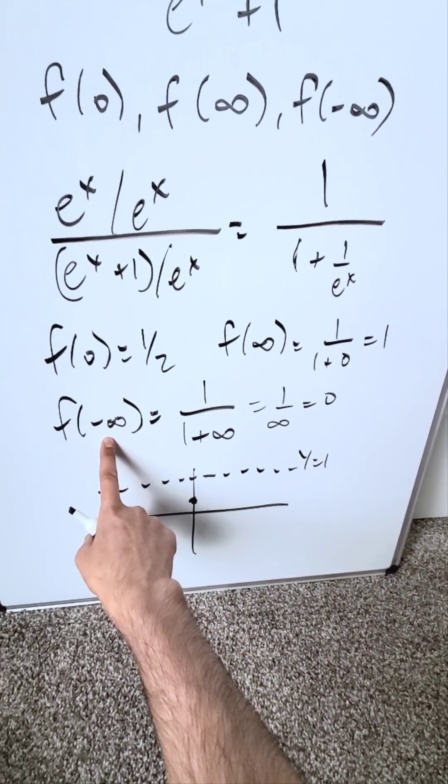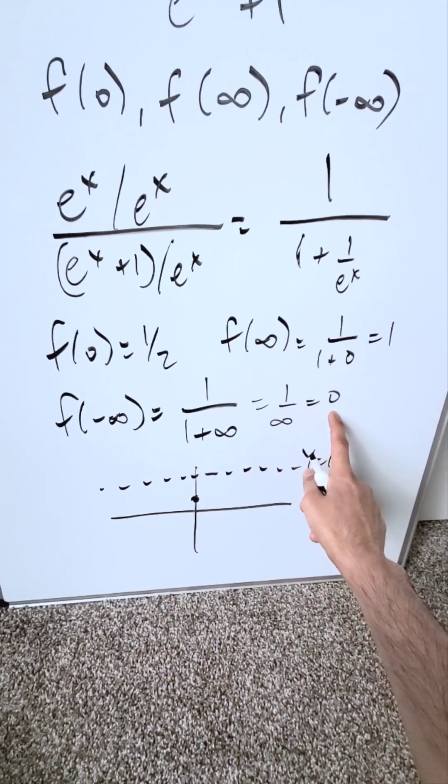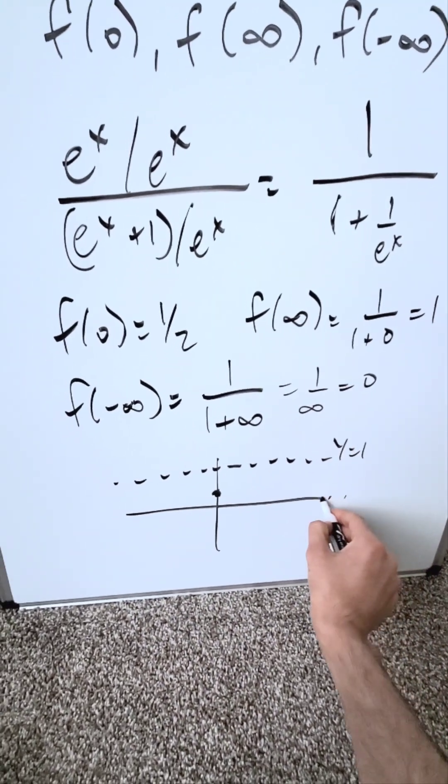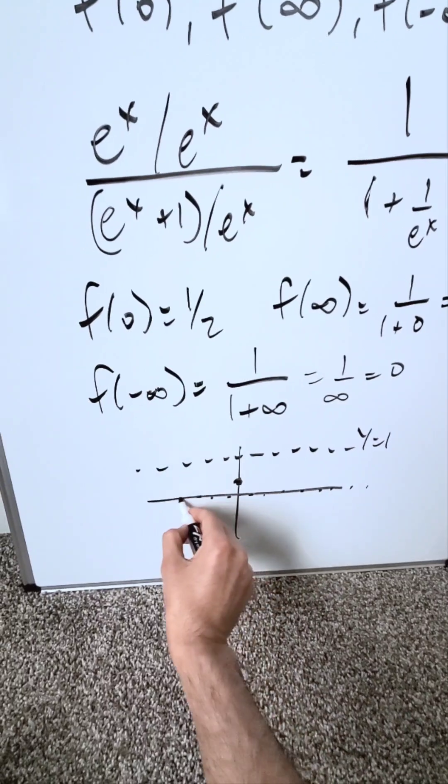When I'm evaluating f of minus infinity, it's giving me a value of 0. It's yet another horizontal asymptote, which is your x-axis, y equals 0.